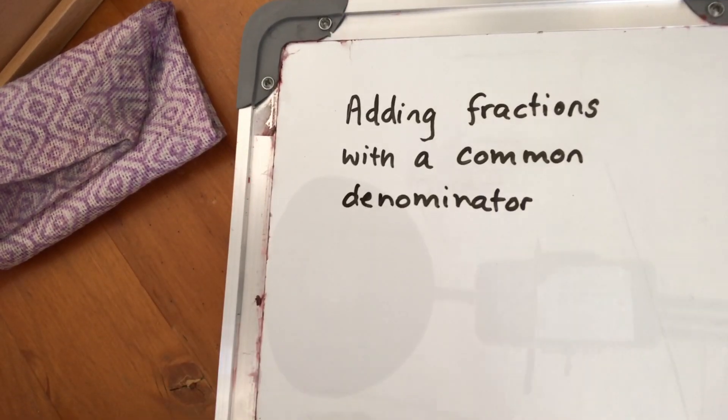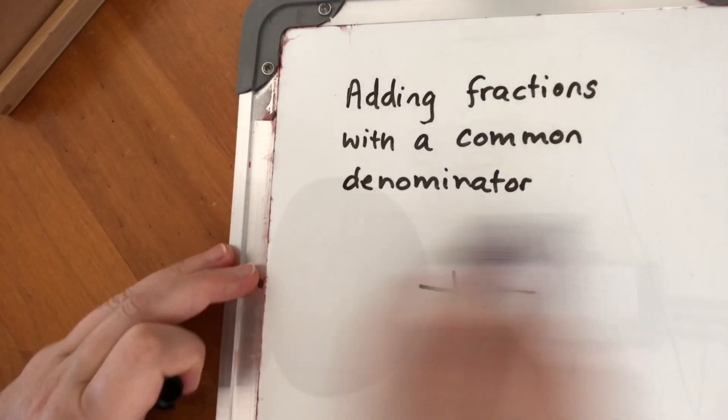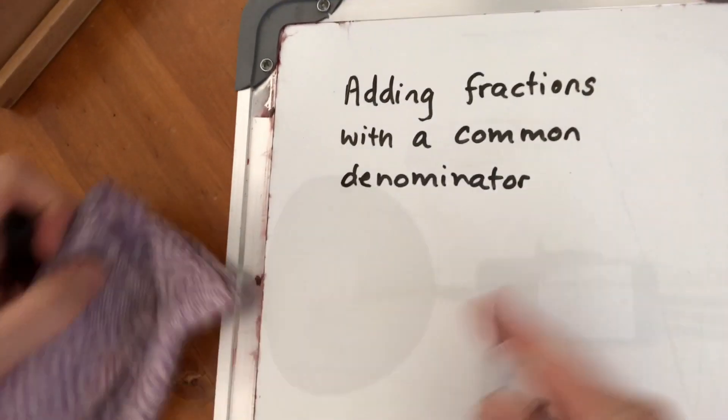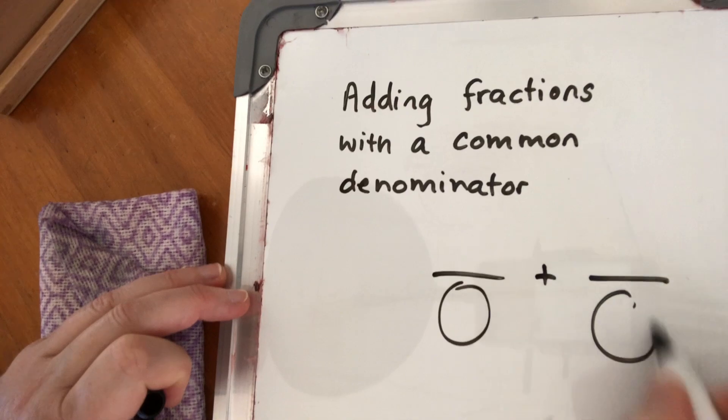So that means the number down the bottom of the fraction, the two fractions we're adding, is the same. Sorry. So the number at the bottom of the fraction is the same.